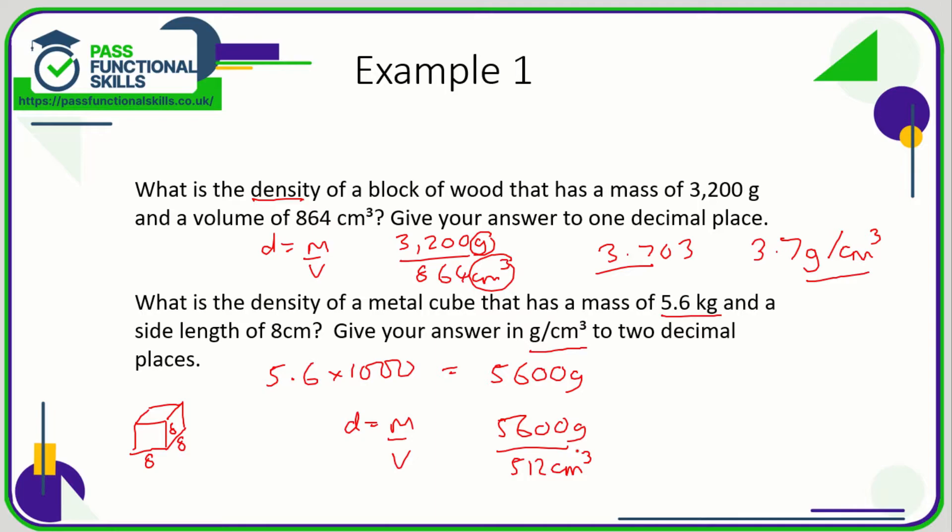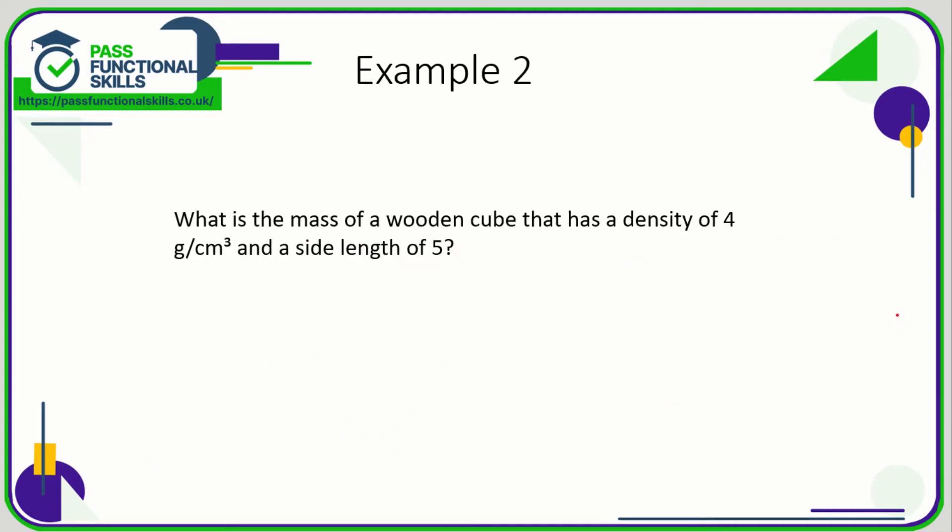So our calculation is 5600 divided by 512 and that comes to a total of 10.9375. To two decimal places we need to look at the value of the third decimal place, so the 5 is irrelevant. This is greater than 5 so the 3 is going to move up 1 to a 4. So the answer is going to be 10.94 grams per cubic centimeter.